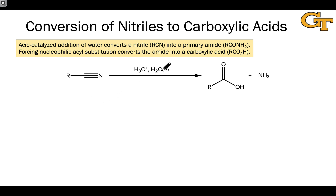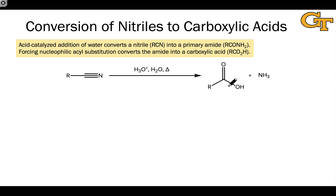However, under hydrolytic conditions — water and a large amount of acid and heat — we can convert the nitrile into a carboxylic acid derivative that does have the ability to undergo nucleophilic acyl substitution. When all is said and done, that intermediate is converted to a carboxylic acid, and ammonia is produced as well.